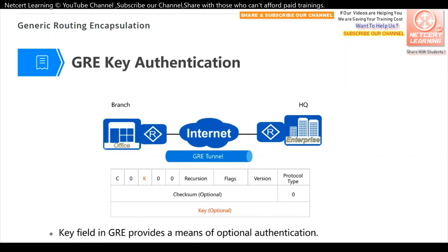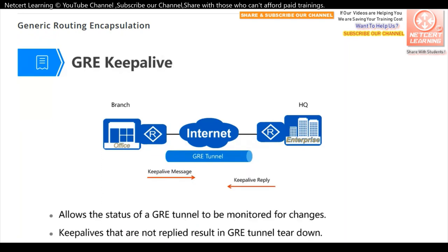GRE also has key authentication. In the GRE header there is a key field, and we can configure a key on both sides to ensure the security of the GRE tunnel. For GRE keepalive: to maintain the relationship between the GRE source and destination, we send keepalive messages to ensure the tunnel is up. If we cannot receive a GRE reply within three keepalive periods, we know the GRE tunnel is down.